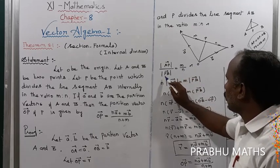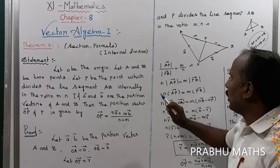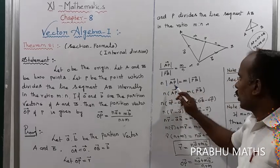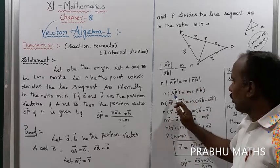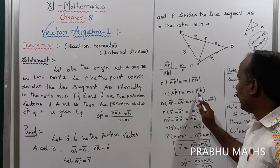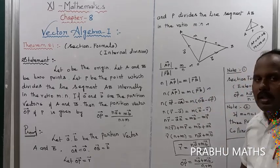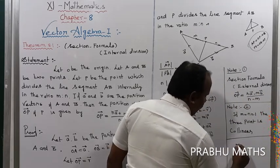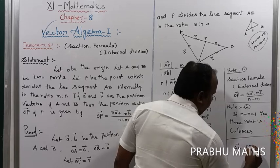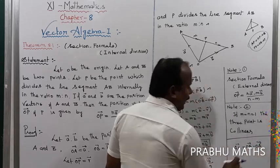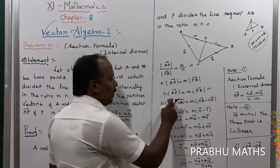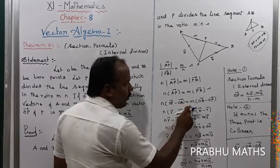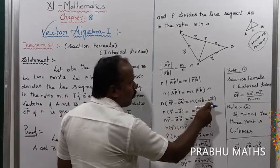By cross multiplication: N into AP equals M into PB. Removing the modulus on both sides: N into AP vector equals M into PB vector. Now, using position vectors — AB vector means OP minus OA — so AP vector equals OP minus OA, and equals M into (OB minus OA) vector.